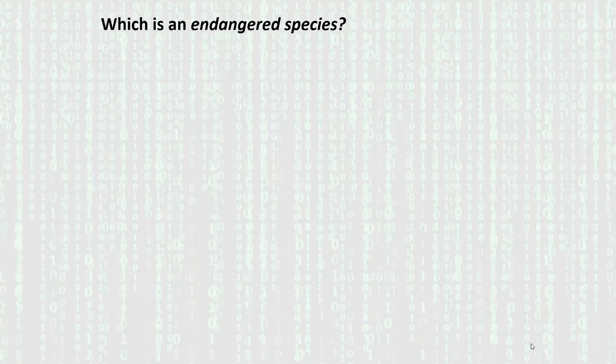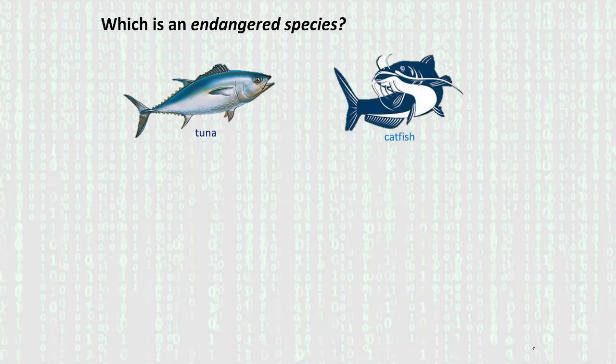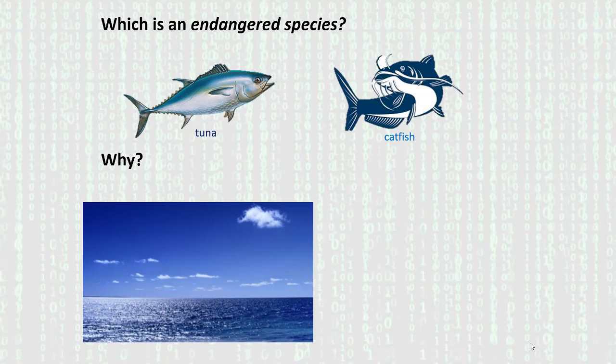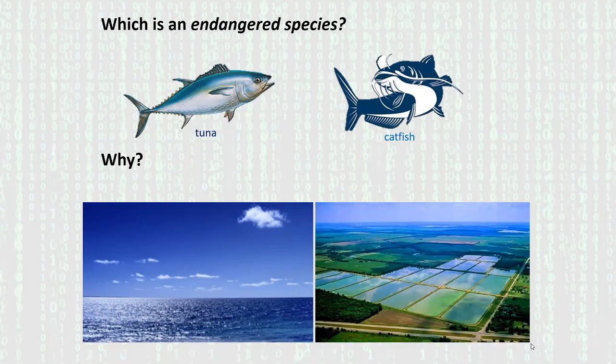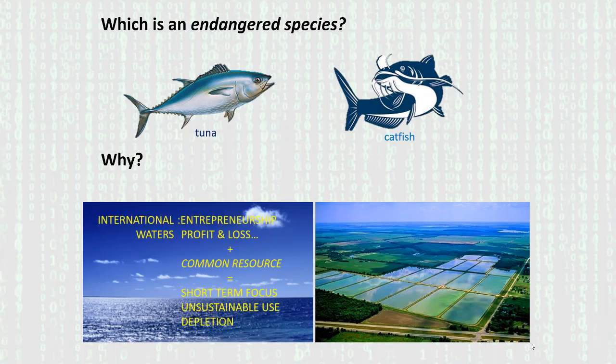Let me wrap up common resources with a quick example of the difference between common and private resources. Which is an endangered species — tuna or catfish? I just showed the data on the bluefin tuna harvest, so tuna have been pressed by overfishing, whereas catfish not so much. The difference is that tuna live in the open ocean's international waters, whereas most catfish are harvested commercially on farms.